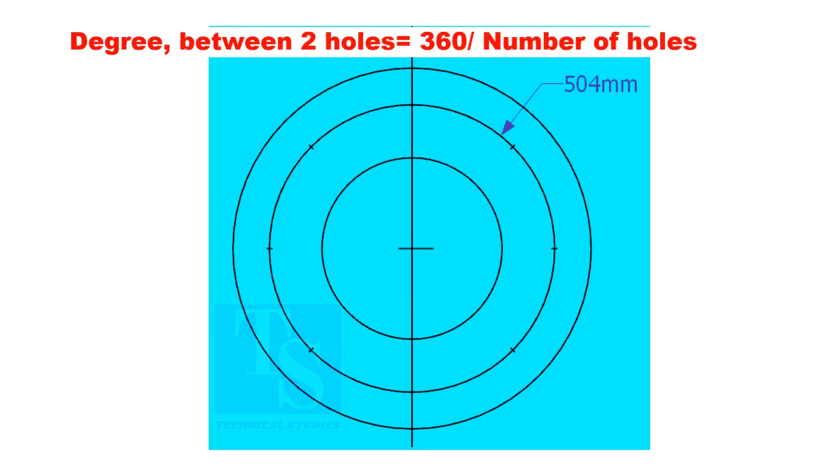If you divide 360 by the number of holes, you will get the angle between two holes.